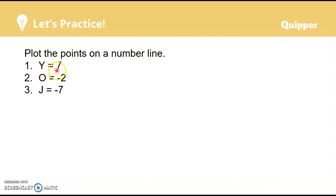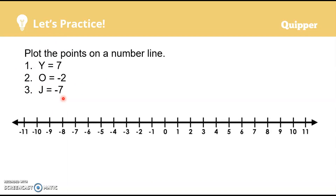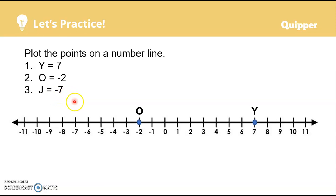We have point Y equals 7, point O equals negative 2, and point J equals negative 7. Where are these points located on a number line? Let's draw a number line. Point Y is at positive 7, so we place a dot there and name it Y. Point O is at negative 2, so we put a dot on negative 2 and name it O. Point J is at negative 7, so we place a point there and name it J. So we have points J, O, Y — joy!